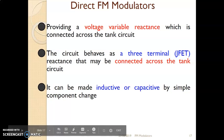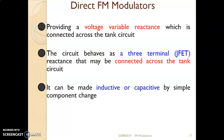In the earlier method, we saw that the varactor diode provides variable capacitance and hence variable frequency. This capacitance was dependent on the amplitude of the modulating signal, and hence the amplitude of the modulating signal changes the capacitance and therefore the frequency of the varactor diode modulator.